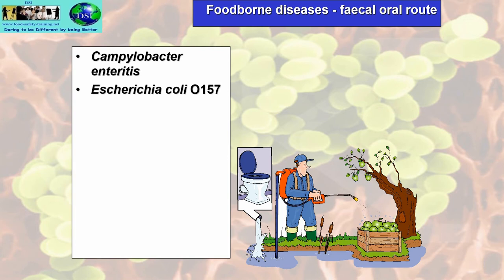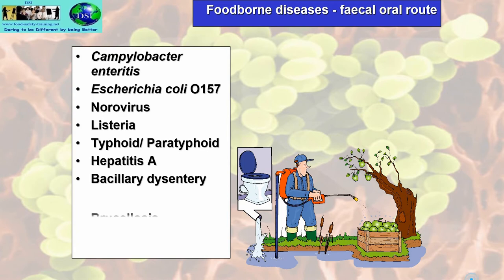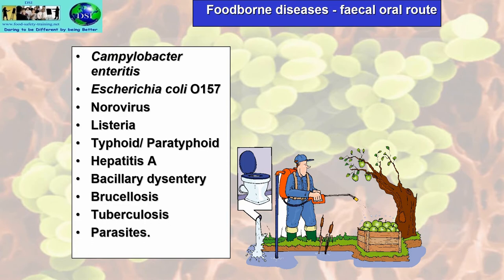Escherichia coli O157 is a common serotype of E. coli in cow's manure, discovered in the early 80s. Other foodborne diseases include Norovirus — the winter vomiting bug — Listeria, Typhoid and Paratyphoid, Hepatitis A, Bacillary dysentery, Brucellosis, Tuberculosis, and parasites.